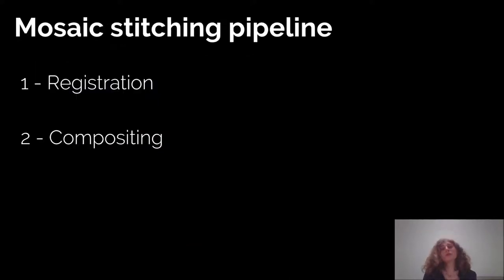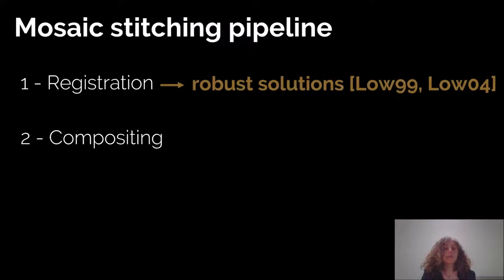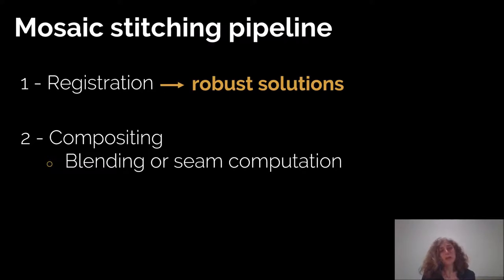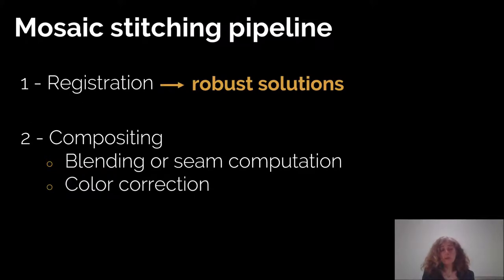The classical mosaic stitching pipeline is made of two main steps: the registration, which allows having all images in the same reference frame before doing any processing, and the compositing, which allows overcoming the two difficulties we've seen before. There are a lot of robust solutions proposed for registration, so we want to mainly focus on the compositing. You usually have some blending or a seam composition, and then once you have all the images put together, you correct the colors to have a seamless image.